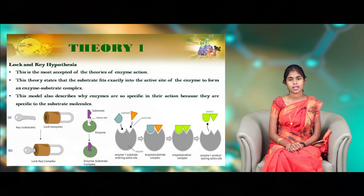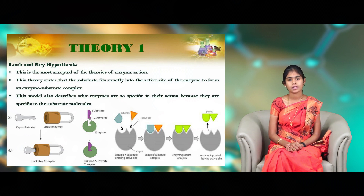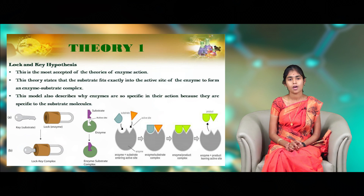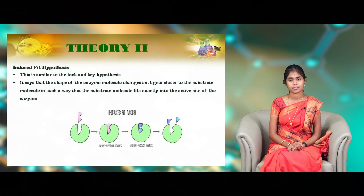The enzyme mechanism has two hypotheses — one is the lock and key hypothesis and another is the induced fit hypothesis. In the lock and key hypothesis, you can see half-oval shaped and triangle shaped structures, which are the substrates, and a half-circular shaped structure with two holes, which is the enzyme. Those holes are considered the active site. The substrate binds with the active site to give a product.